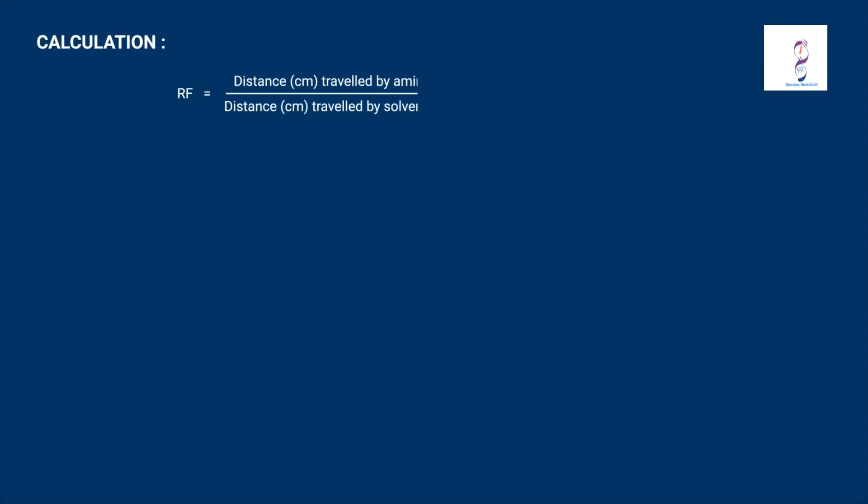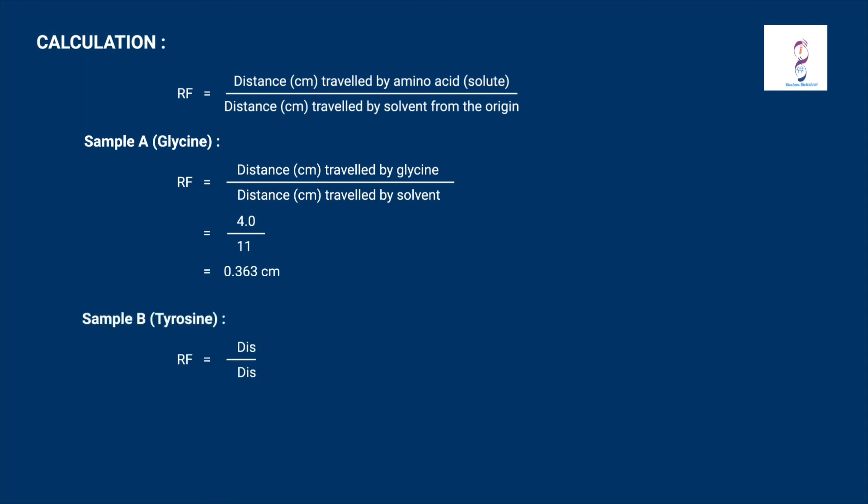The calculation of Rf value is the distance traveled by amino acid divided by the distance traveled by the solvent from the origin. Sample A is glycine with an Rf value of 0.363.